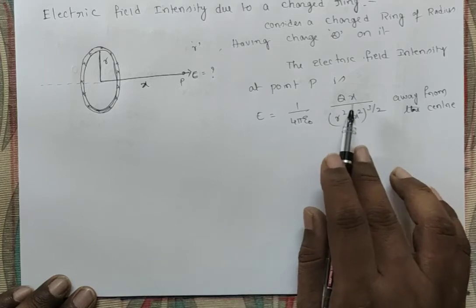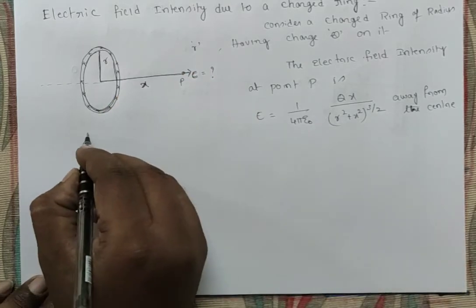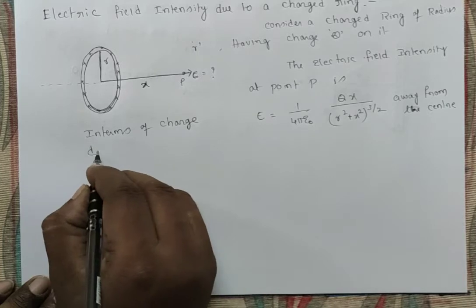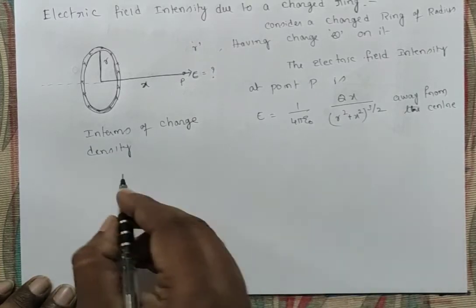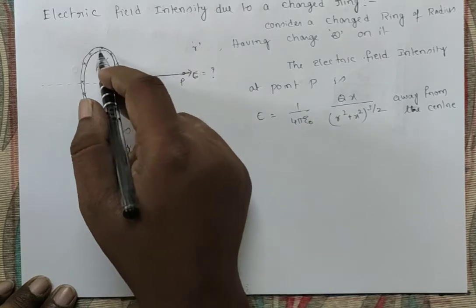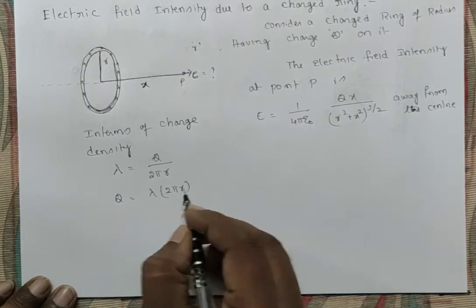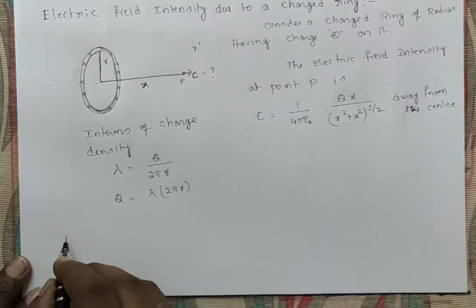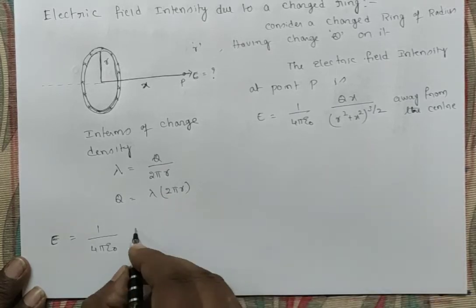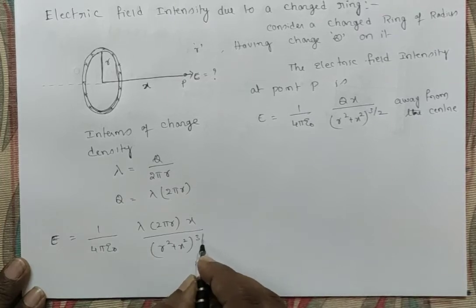We can also write this expression in terms of charge density. Since it is a linear conductor, the linear charge density lambda equals charge per unit length, which is Q divided by the perimeter 2πR. So Q = λ·2πR. Substituting into the expression: E = (1/4πε₀) · λ·2πR·X / (R² + X²)^(3/2). The 2π cancels, giving E = λRX / [2ε₀(R² + X²)^(3/2)].